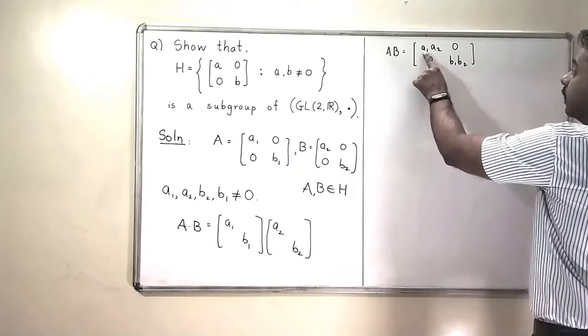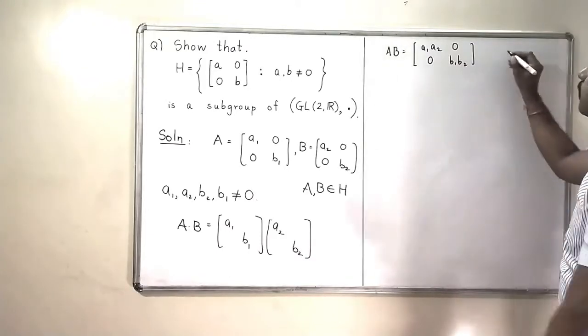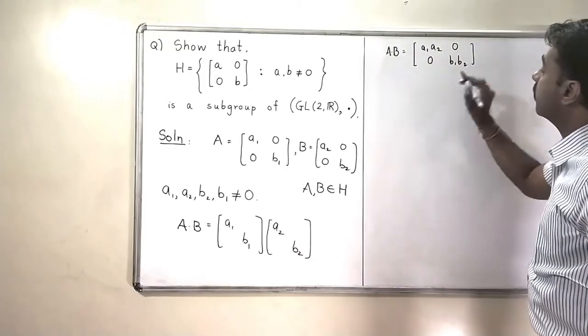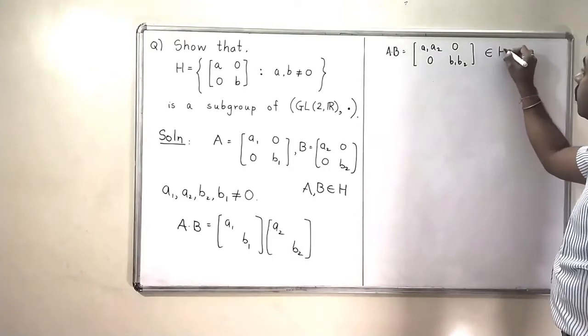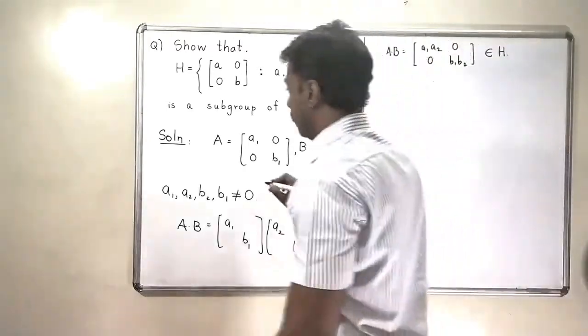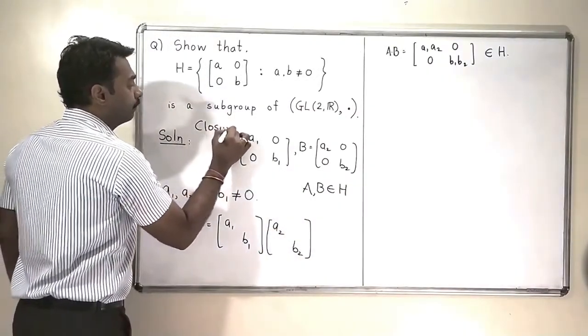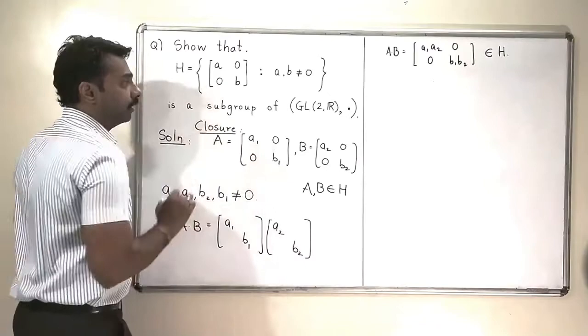Again, this entry is not equal to 0 and this entry is also not equal to 0. Therefore, this multiplication of matrices A into B actually belongs to H. So the closure part is done. Let me write here. This was our closure part. So the closure is satisfied.